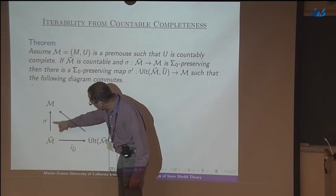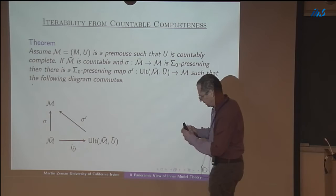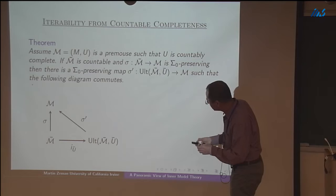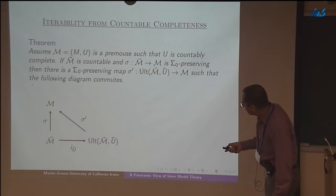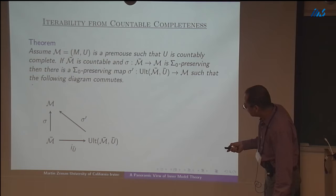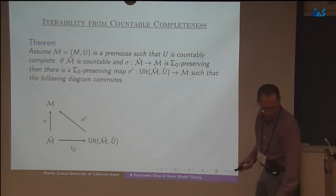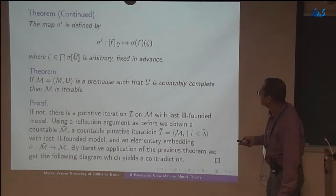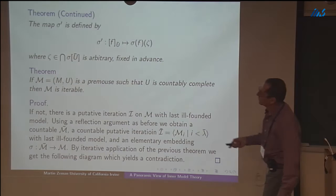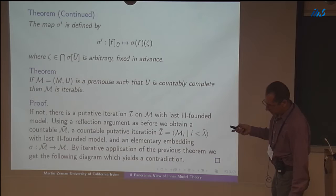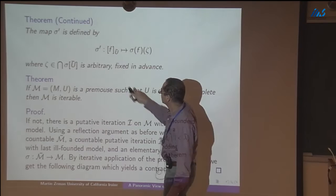If we assume that u is countably complete and we take a countable pre-mouse which we can embed into m, then the measure u collapses down to a small measure ū. We take an ultrapower of the small mouse and can embed it back into m — the ultrapower — in a way which makes the diagram commute. Here is the map: it's an embedding defined along the same lines as the embeddings in the shift lemma.